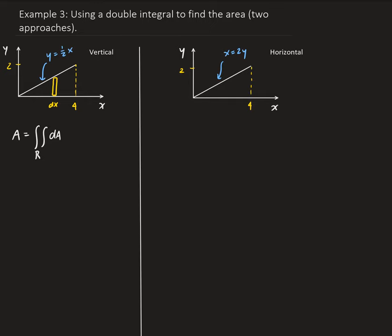For this setup, we want dx to be on the outside, and that means we're going to have dy inside. So we're using a vertical representative piece, which means for that particular piece our bounds are going to go from zero to one-half x. Because that is y — that's y in terms of x. And then dx goes from zero up to four. So that's how we set up our integral.